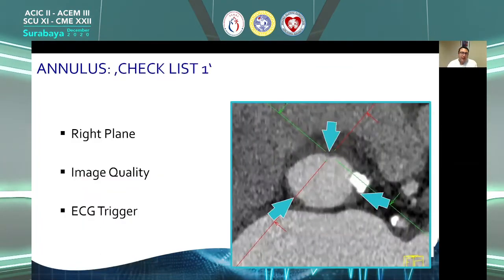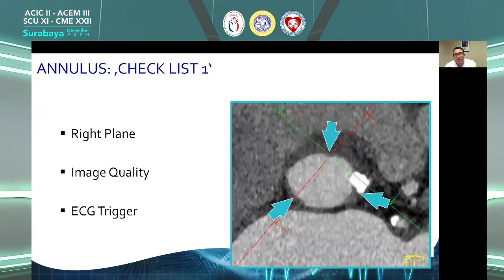So the first checklist for the annulus: the right plane is very important — take time to get to this plane and make sure you're at the right plane. Image quality is decisive and ECG triggering is important. In case of artifacts or rhythm issues, you have to check the ECG for the possibility of retrospective reconstruction.